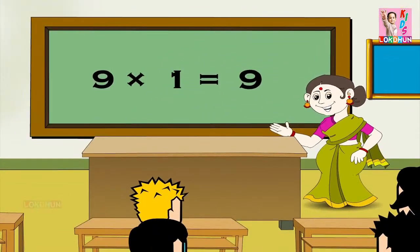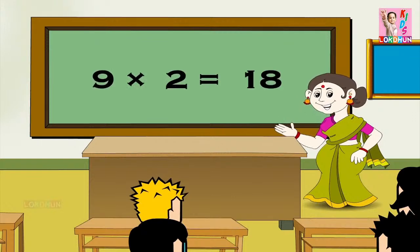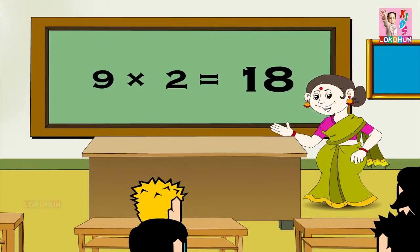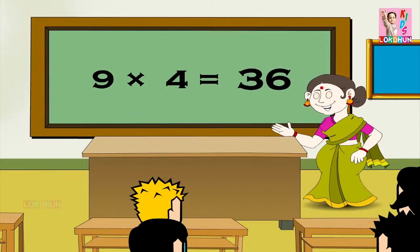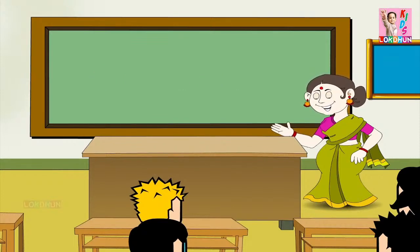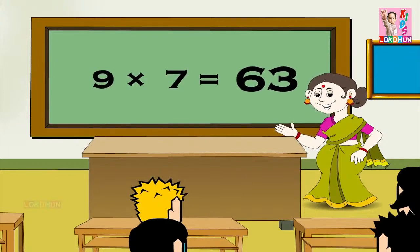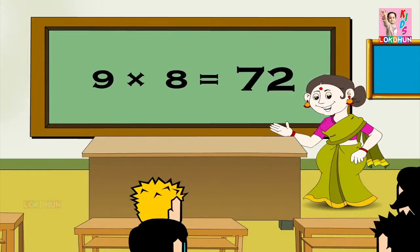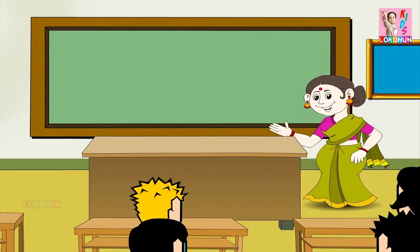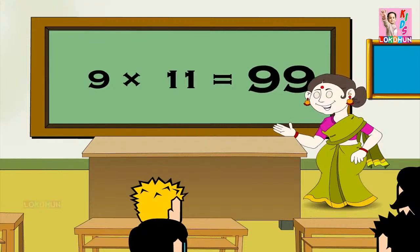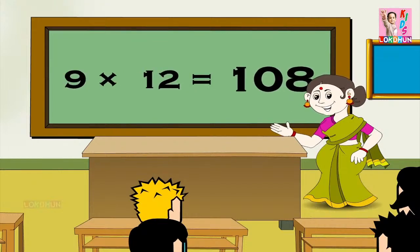Nine ones are nine, nine twos are eighteen, nine threes are twenty-seven, nine fours are thirty-six, nine fives are forty-five, nine sixes are fifty-four, nine sevens are sixty-three, nine eights are seventy-two, nine nines are eighty-one, nine tens are ninety, nine elevens are ninety-nine, and nine twelves are one hundred and eight.